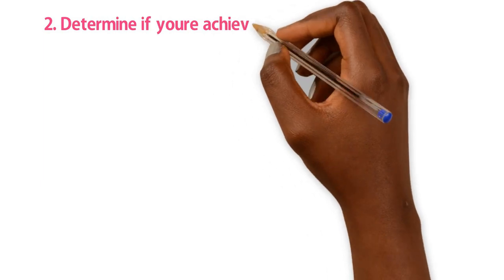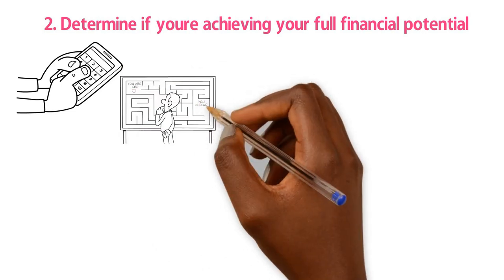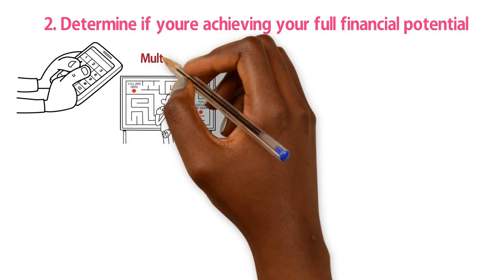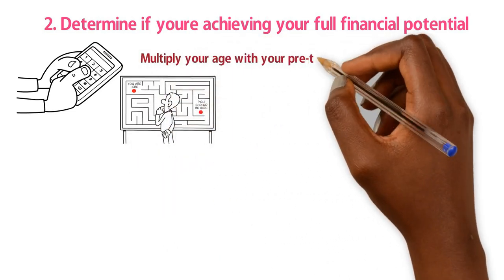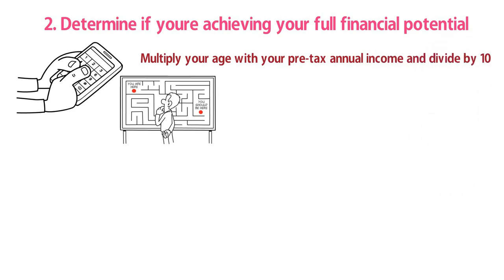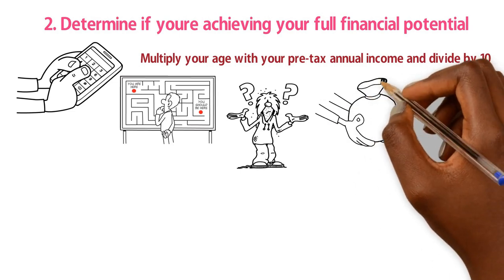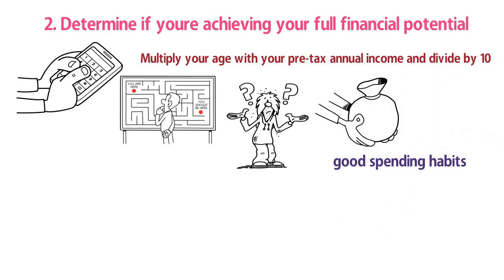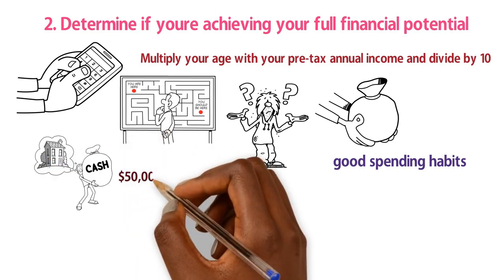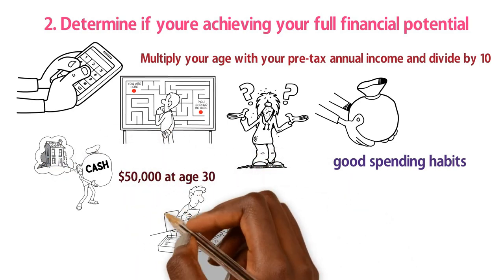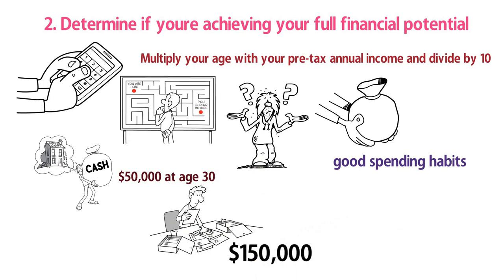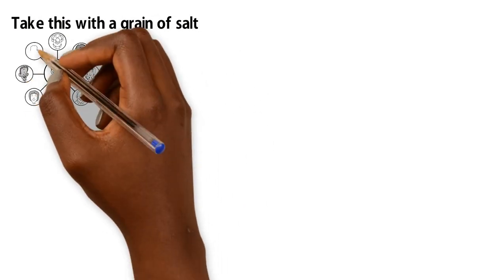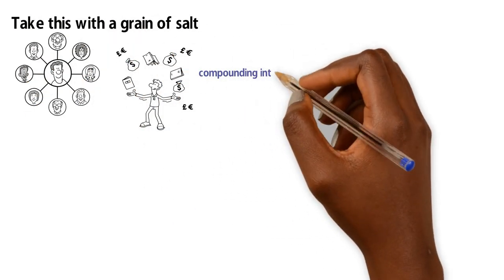Rule 2: Determine if you're achieving your full financial potential. You can calculate if you're not reaching your full financial potential with this simple equation. Multiply your age with your pre-tax annual income and divide that by 10. Whatever this number is reflects how rich you could be right now if you've already cultivated good spending habits. For example, if you earn $50,000 at age 30, your expected wealth comes out to $150,000.